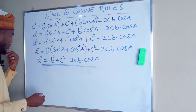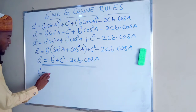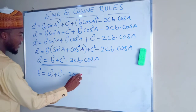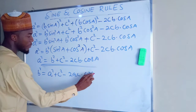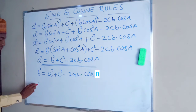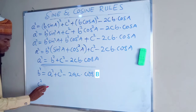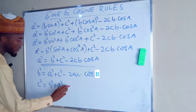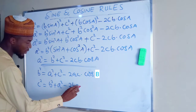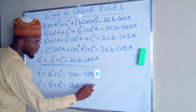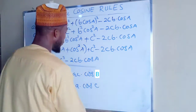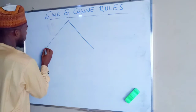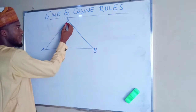Therefore a² = b² + c² − 2bc·cosA — this is the cosine rule. If you are looking for side length b, you say b² = a² + c² − 2ac·cosB. And if you are looking for side length c, you say c² = b² + a² − 2ba·cosC.